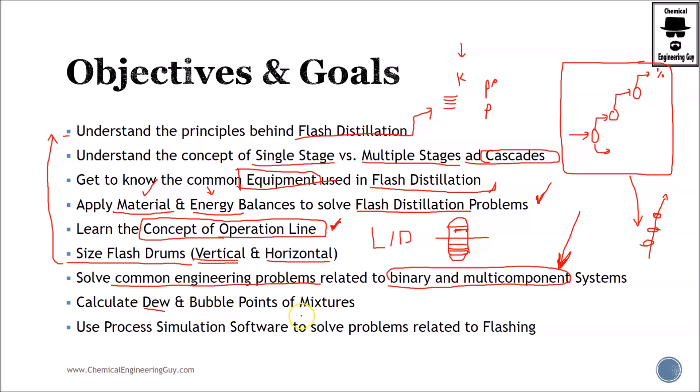Calculate dew and bubble points of mixtures, either binary mixtures or multi-component systems. It's very important to know how to get TXY diagrams, identify which line is the dew point line and which line is the bubble point and so on. And I'm pretty sure you love this section of process simulation, how we use Aspen Plus or HYSYS in order to get equilibrium data, in order to get the dew and bubble points, also in order to calculate heat duties, temperatures, equipment, sizing, flow rates, and more importantly, the material balances.